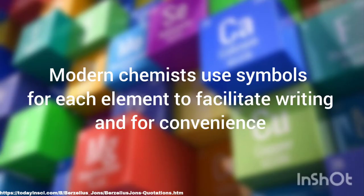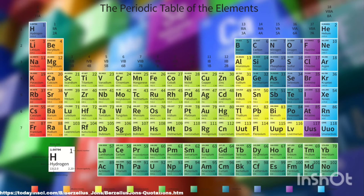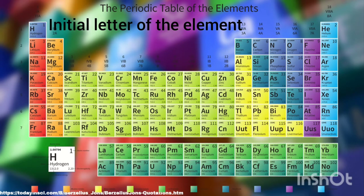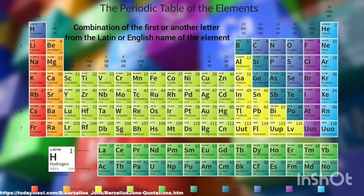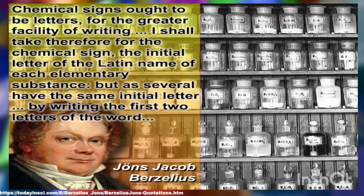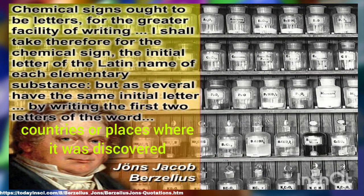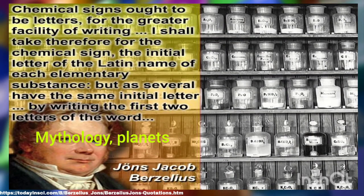Modern chemists use symbols for each element to facilitate writing and for convenience, assigning each element a unique symbol. Each element's symbol has a different origin. Some element symbols are either the initial letter of the element or a combination of the first or another letter from the Latin or English name of the elements. This system of chemical symbols was invented by John Jacob Berzelius. Aside from Latin and English names, some elements' names and symbols were derived from the scientist or discoverer's names, countries or places where it was discovered, mythology, planets, Greek and German names, colors, etc.